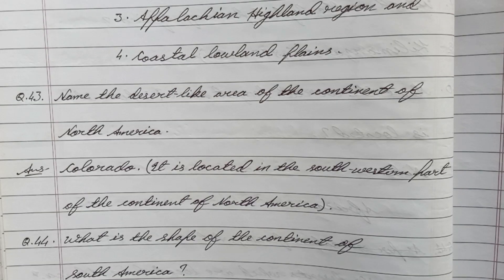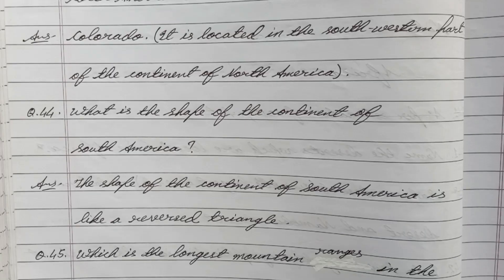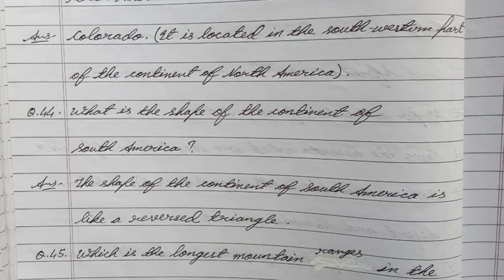Question 43: Name the desert-like area of the continent of North America. Answer: Colorado. Question 44: What is the shape of the continent of South America? Answer: The shape of the continent of South America is like a reverse triangle.